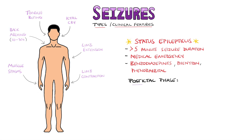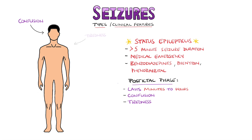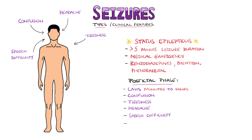Following a seizure, there is the post-ictal phase, which precedes a return to normal consciousness. Post-ictal periods can last from minutes to hours and usually feature confusion, tiredness, headaches and difficulty in speaking. Up to around 10% of people also experience psychosis and many individuals have some form of amnesia.